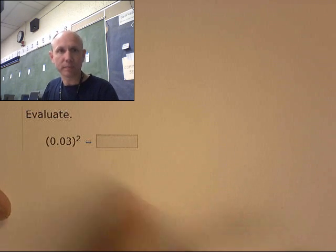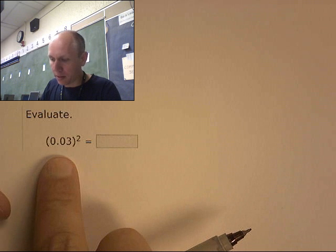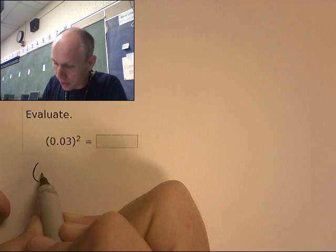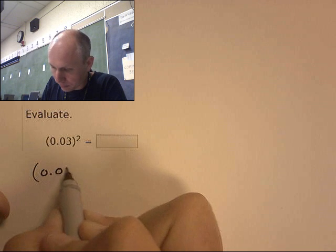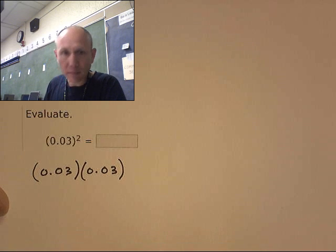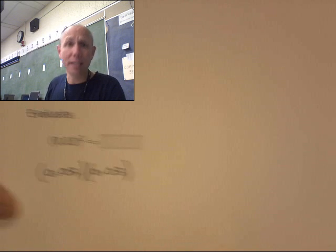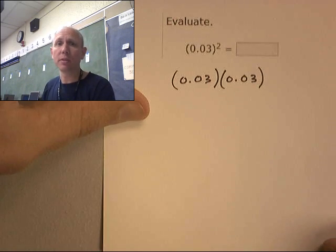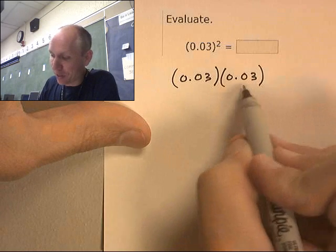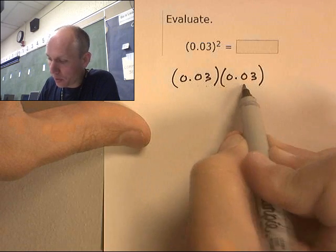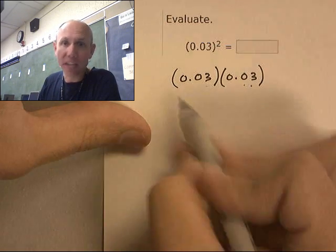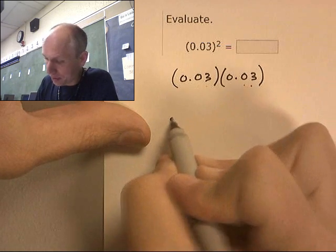Here's one with a decimal. Well, this is just telling me to multiply 0.03 by 0.03. And since I am the king of multiplying decimals, I can do that. Really what it is, isn't it three times three with one, two, three, four decimal places? It's nine with four decimal places. But here, I'll prove it to you.